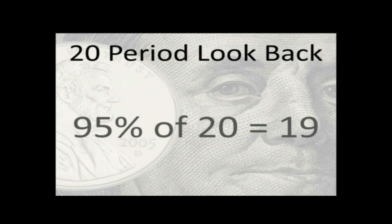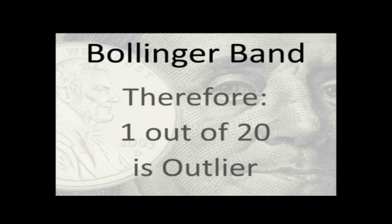With a 20-period look-back, if 95% is average, 95% of 20 is 19. Therefore, one out of 20 is the outlier. For sixth grade boys, that outlier might be a boy who is too tall or too short — a non-average height.